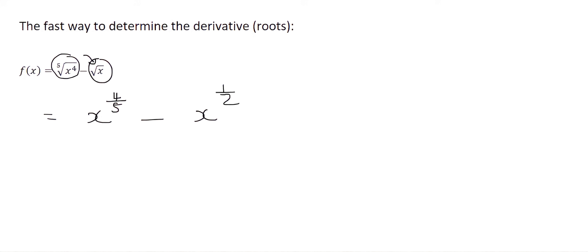And now we can use the normal method, so we just multiply this 4 over 5 in the front. We then minus 1, so 4 over 5 minus 1 is minus 1 over 5, minus a half, because I multiplied this half to the front. Then I have x, and then I minus 1 from that, so that's going to be negative a half.